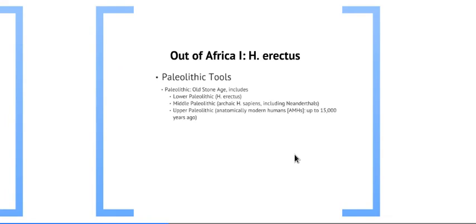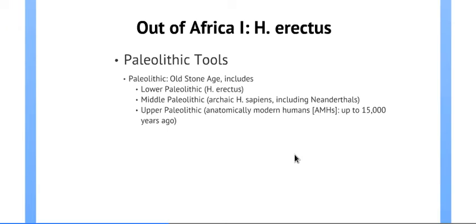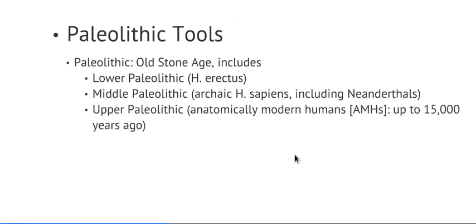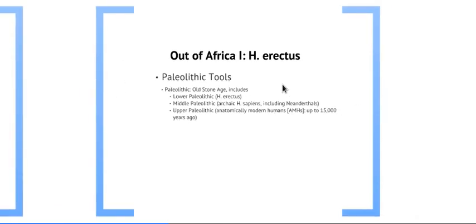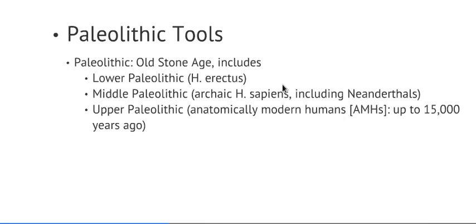Let's talk about the Paleolithic tools of the Old Stone Age. The word 'paleo' in Greek means old, and 'lithos' or 'lithic' means stone — so Paleolithic simply means 'old stone.' There are three different iterations of Paleolithic toolkits for different members of the genus. The lower Paleolithic belongs to Erectus and even inherited the initial development of tools present in Homo habilis.